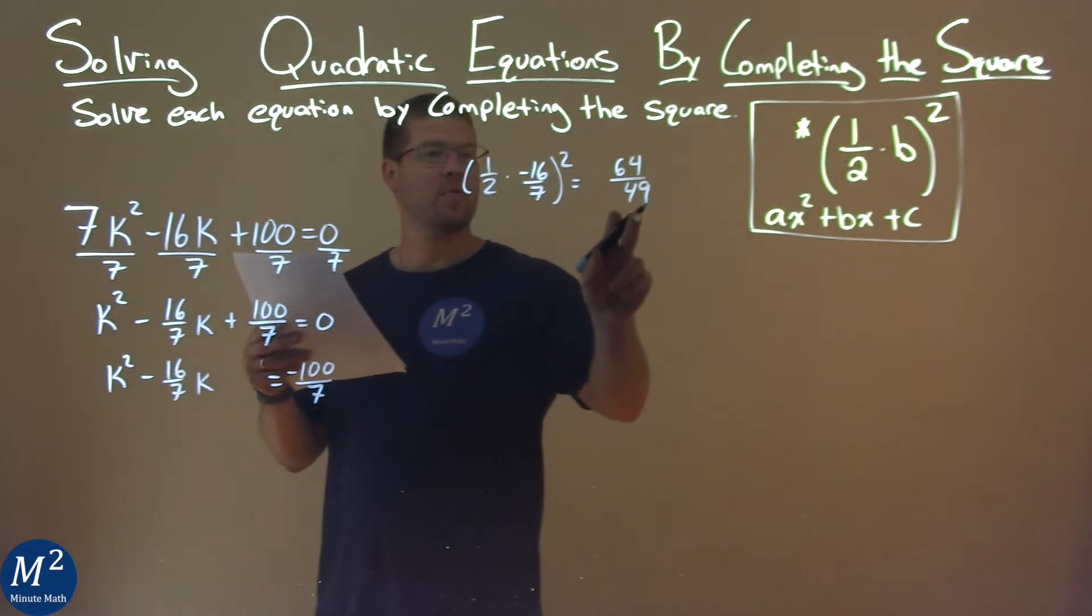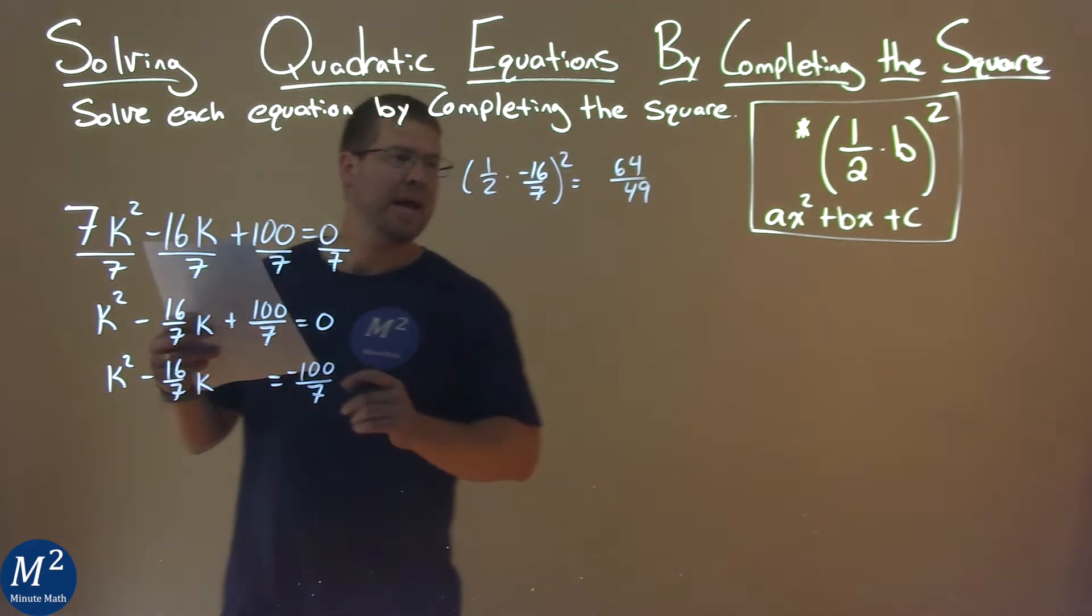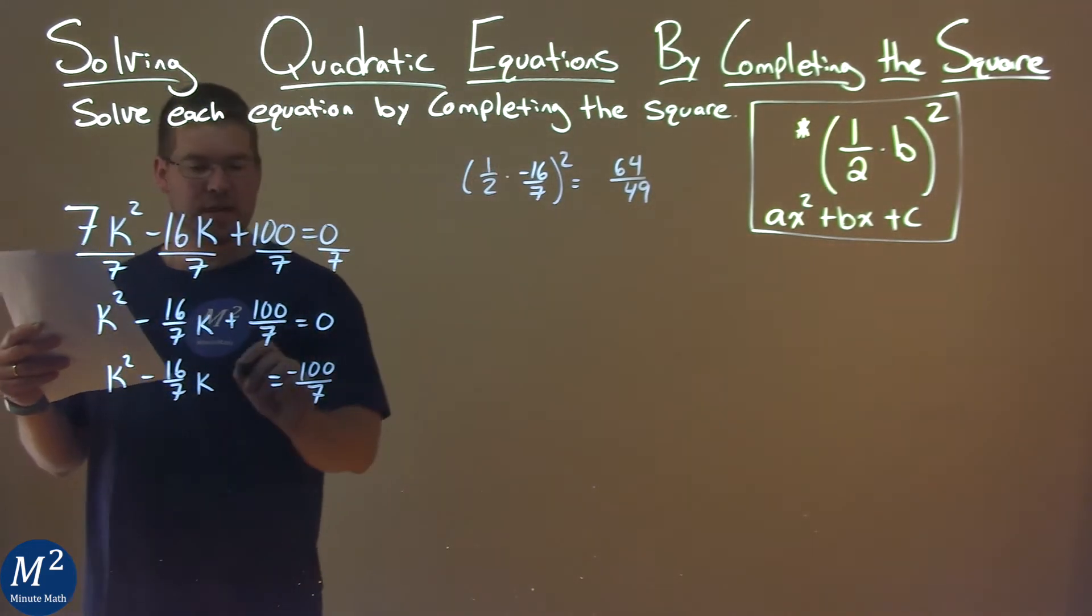So, I'm going to take that 64 over 49, and I'm going to add it to both sides of the equation, plus 64 over 49.